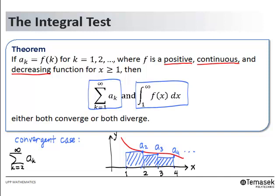If the series is going to be convergent, we can add a_1 to it and then get the original infinite series from a_1 all the way to infinitely many terms. Comparing with the area under the curve, we see that in this situation the area under the curve is greater. So the series is less than or equal to the integral from 1 to infinity of f(x) dx. If the integral is convergent — that is, finite — it follows that the infinite summation is also finite, meaning it is convergent.